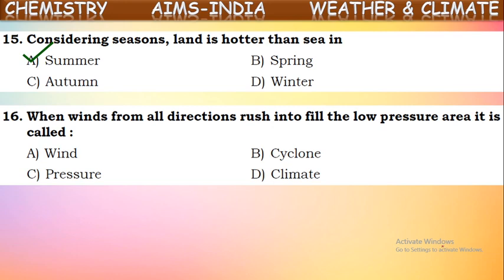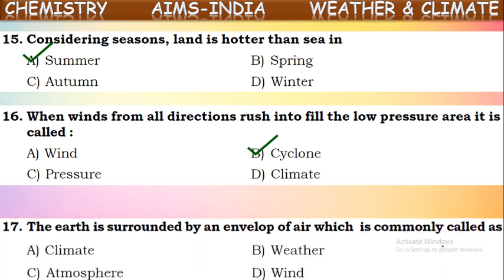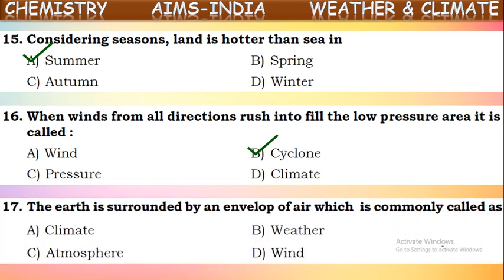Next question: the Earth is surrounded by an envelope of air which is commonly called what? The Earth is surrounded by this envelope of air, which is called the atmosphere. It is totally called the atmosphere layer.